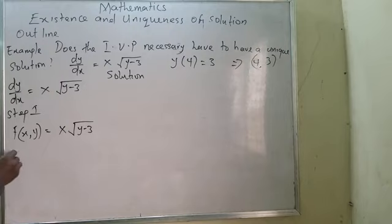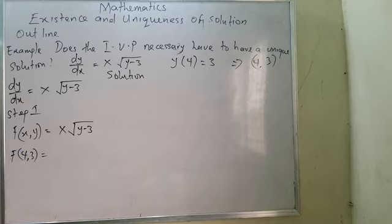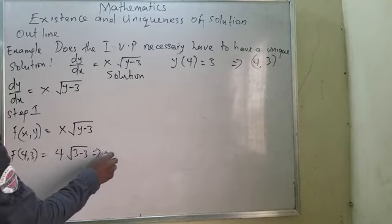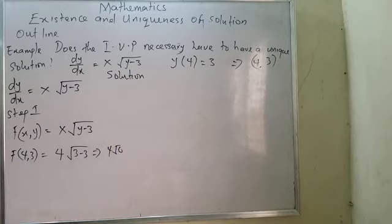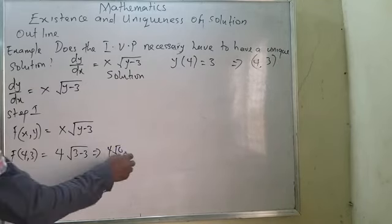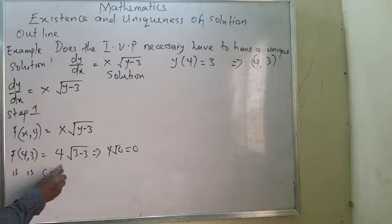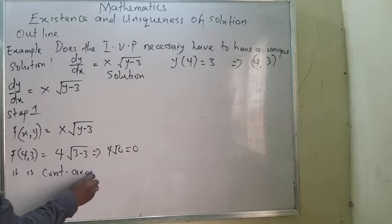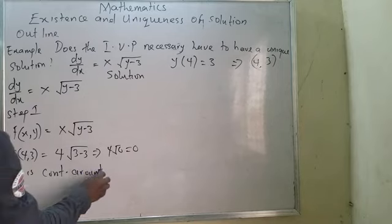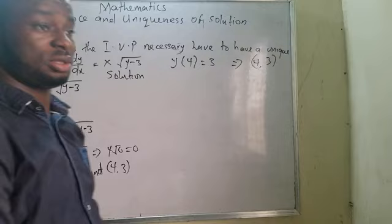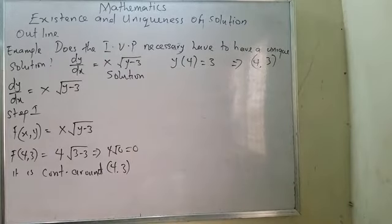Now evaluate f(4, 3): substitute x = 4 and y = 3 into f(x, y) = x√(y − 3). We get 4√(3 − 3) = 4√0 = 4 × 0 = 0. Since zero is a real number on the real line, f is continuous around the point (4, 3). Step one is satisfied — the solution exists near (4, 3).